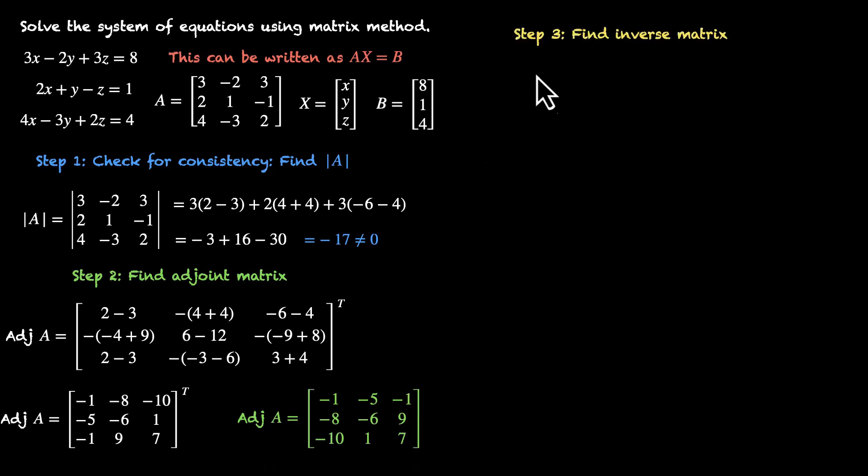Let's find the inverse. A inverse is adjoint matrix divided by the determinant of A. That's -17. So we write 1 by -17 times this adjoint matrix. So let's leave it at this. We can't divide -1 by 17 right now. So this is the inverse matrix.